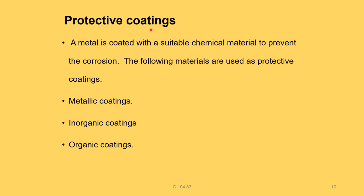Protective coatings: a metal is coated with a suitable chemical material to prevent corrosion. The following materials are used as protective coatings: metallic coatings, inorganic coatings, and organic coatings. Metallic coatings are of two types: anodic coating and cathodic coating.